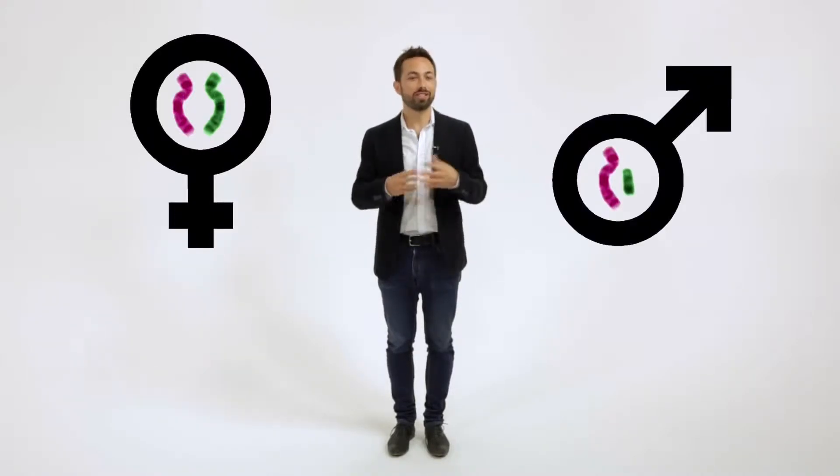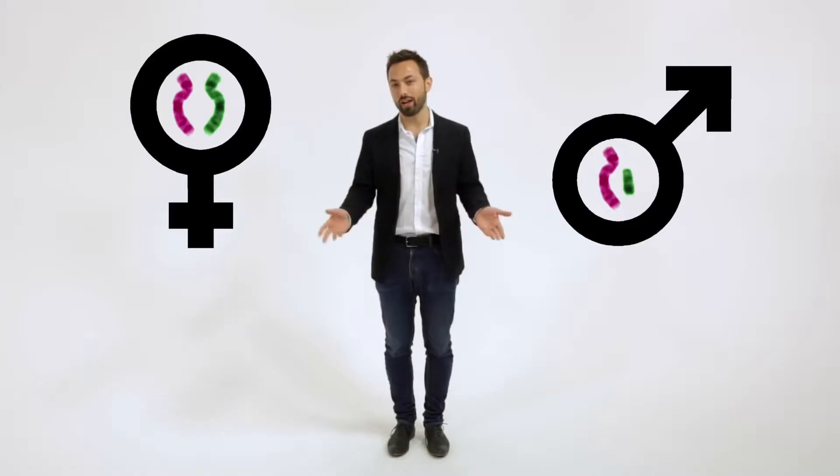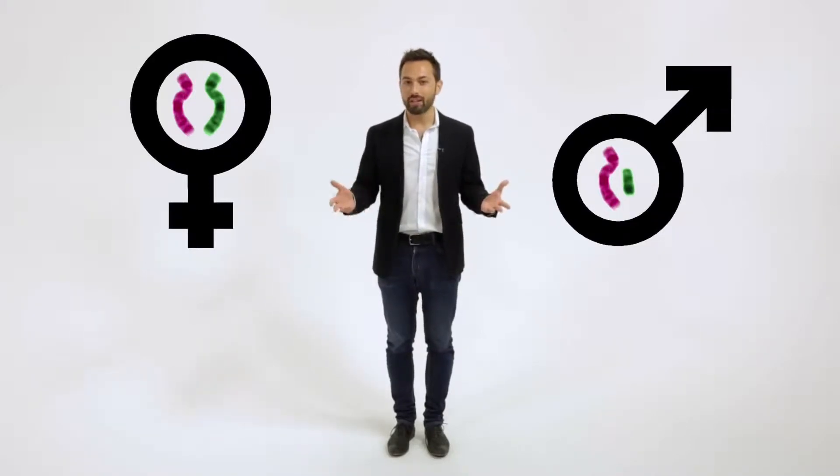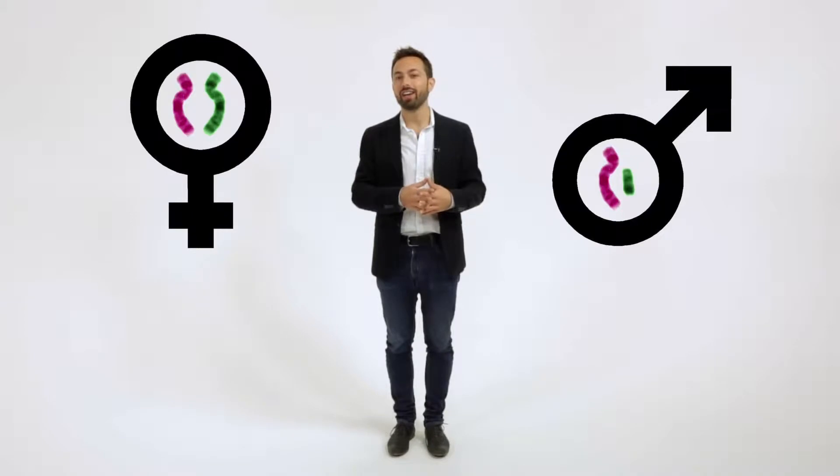So two X chromosomes make you female, and an X and a Y make you male. Now since the male sex chromosomes are different, both can remain active for the rest of your life. But for females, one of the X chromosomes needs to be inactivated in order for proper development to occur.